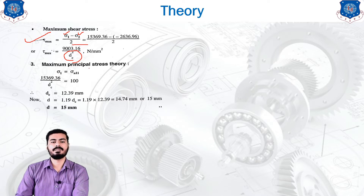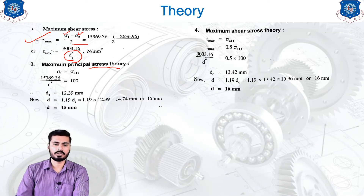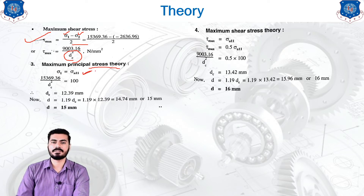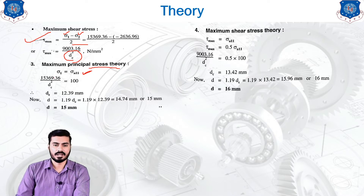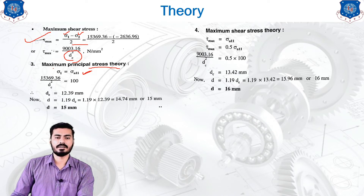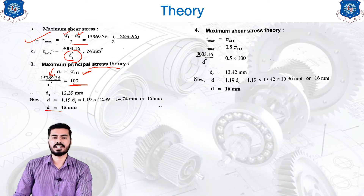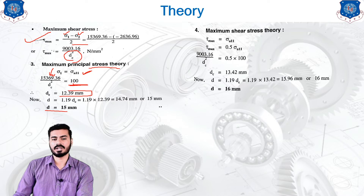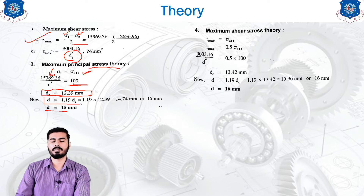According to the maximum principal stress theory, sigma 1 equals sigma allowable. No factor of safety is provided, so we consider the maximum limit condition. The value of sigma 1 is inserted into this equation with sigma allowable equal to 100 MPa. Simplifying gives the core diameter dc. The bolt diameter d is then found using d equals 1.19 times dc, giving a final answer of 15 mm.